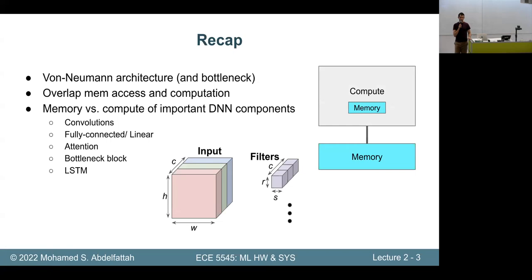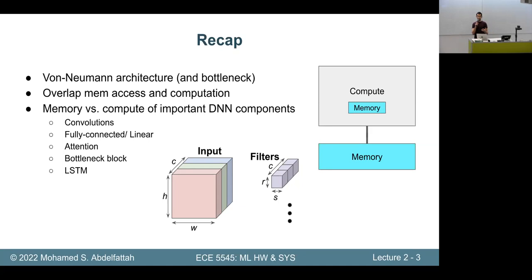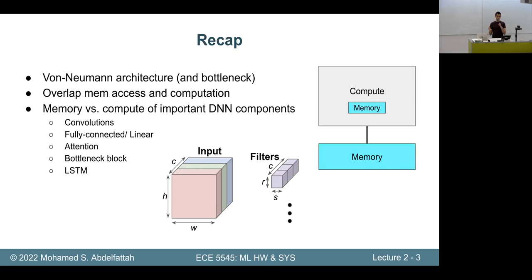In the previous lecture, we started developing a mental model of a hardware accelerator, largely based on von Neumann architectures — a compute element and a memory element connected through a low-bandwidth bus, known as the von Neumann bottleneck. We add on-chip memory to get around that by getting data closer to computation, and we try to overlap memory access and computation as much as possible.